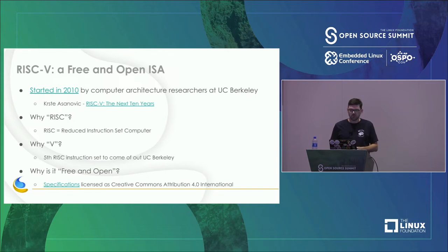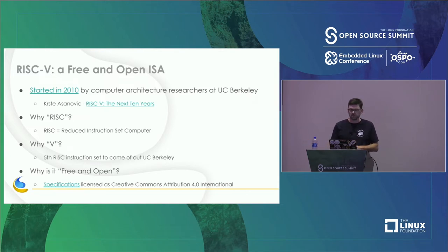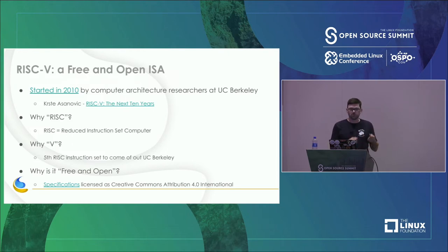Krista Asanovic has an interesting talk from the summit last year called 'RISC-V: The Next Ten Years' because it was the ten-year anniversary — a good one to check out for the history. The V is the Roman numeral for five — it's the fifth instruction set to come out of Berkeley.